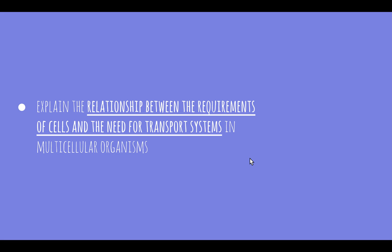Today we're going to look at how each cell needs particular things in order to function properly, and that in multicellular organisms we need transport systems to carry those nutrients or requirements from where they are taken in to where they are needed.